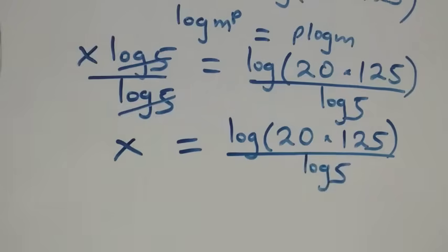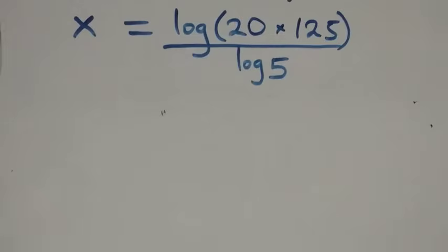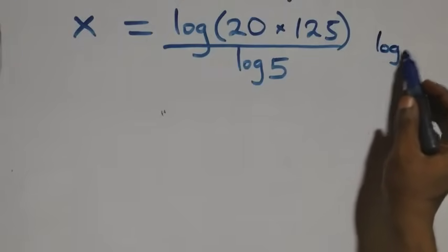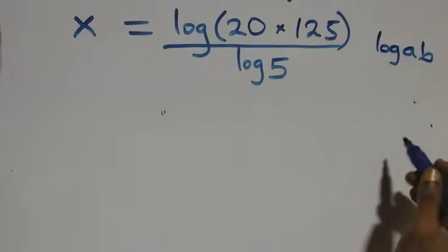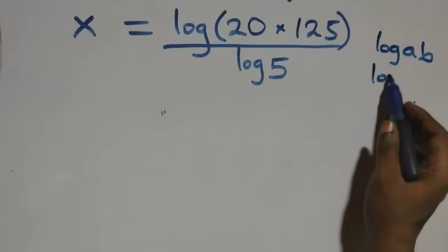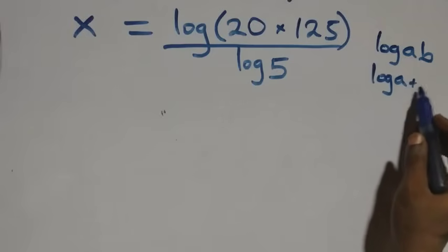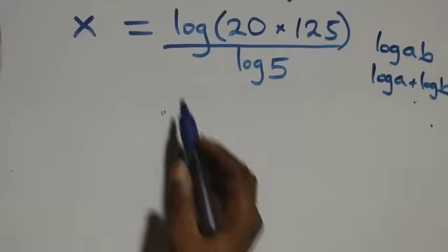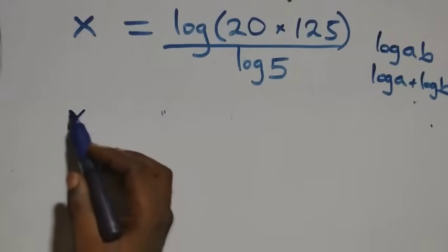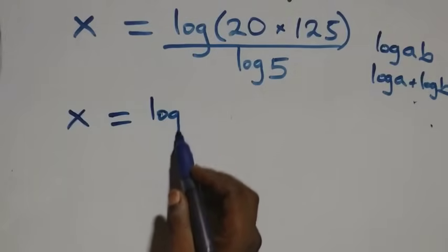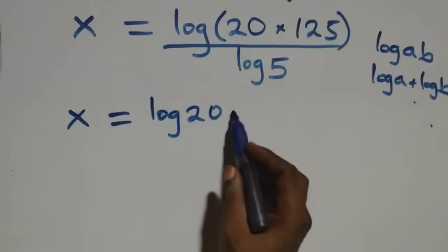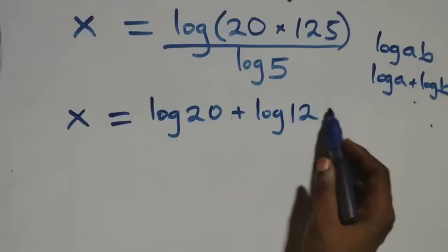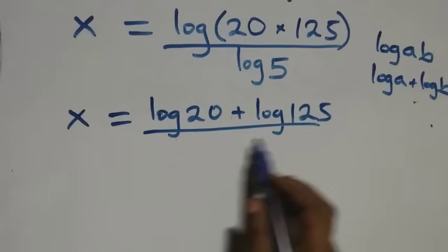From here, we apply the log product rule: when we have log a times b, it is the same thing as log a plus log b. So what we have becomes x equals to log twenty plus log one hundred and twenty-five, over log five.